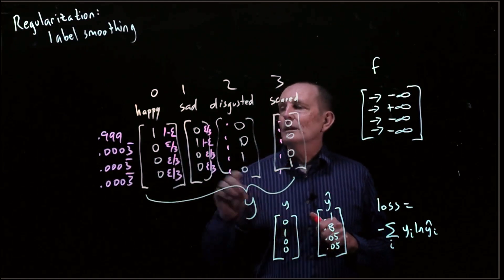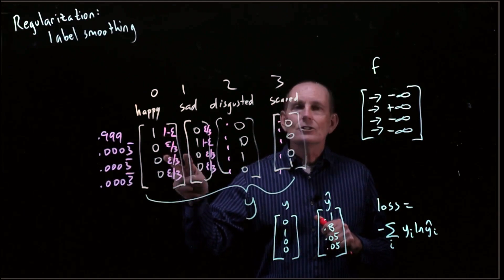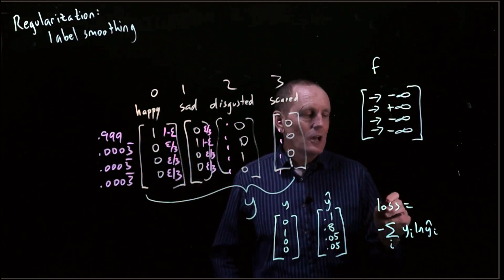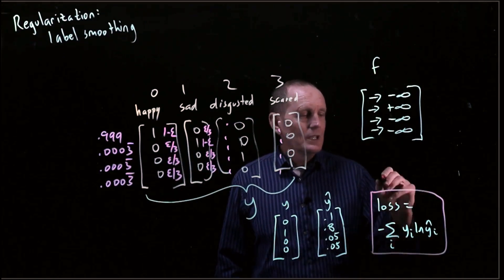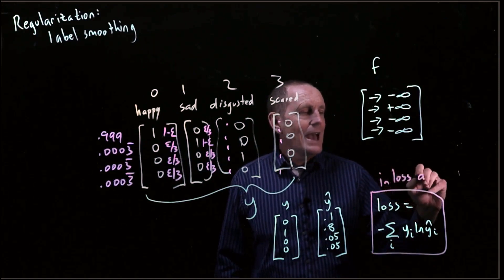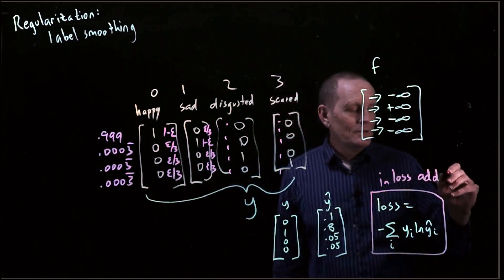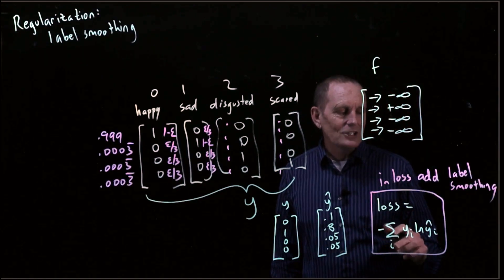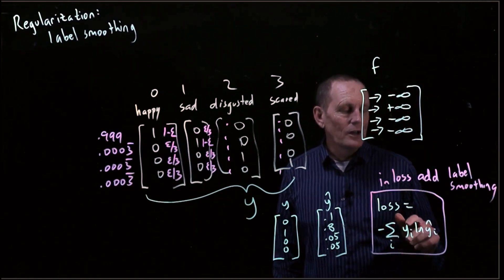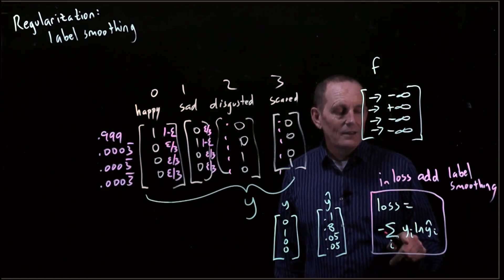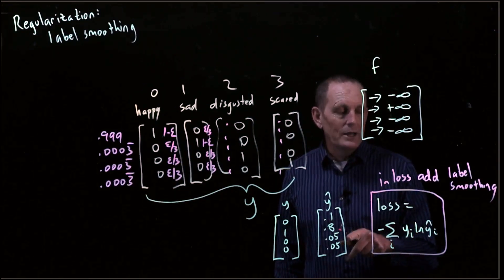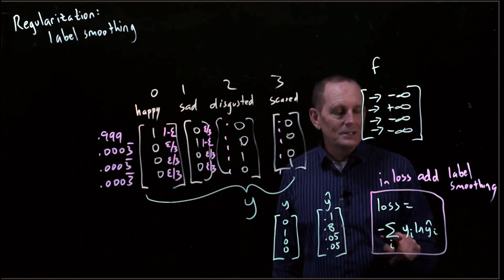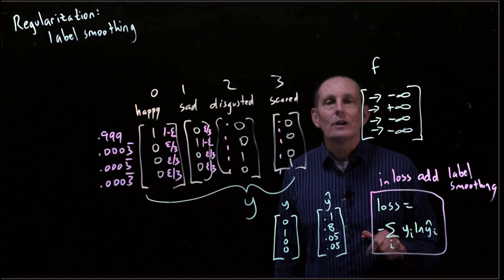There are two ways label smoothing can be implemented. One way is to go ahead and actually change the y's directly. A second way is to implement it in the loss function — adjusting the loss so that if y sub i is 1, it becomes 1 minus epsilon times log of y-hat sub i, and if y sub i is 0, it becomes epsilon times log of y-hat sub i.